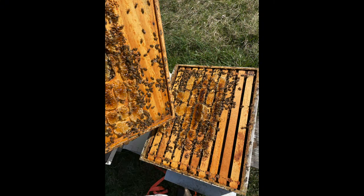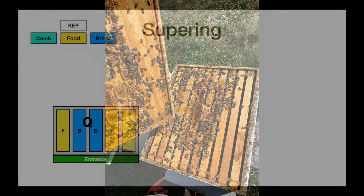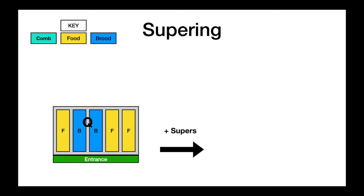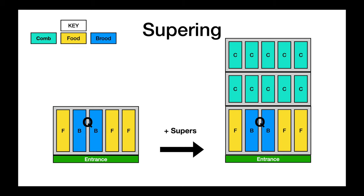Another tool to prevent swarming is giving the bees more space. Supering draws nectar up and opens up the brood nest — really talking about supering with drawn comb. You can super with foundation and they'll start pulling those, but it doesn't work nearly as well as having drawn comb. This is a trap a lot of new beekeepers land in: without drawn comb, sometimes you're just stuck with having some swarming or performing splits.